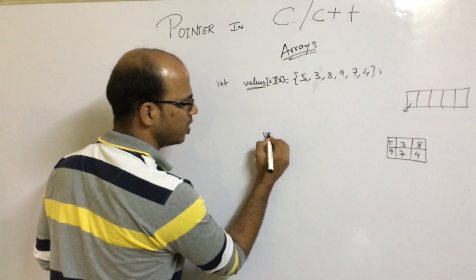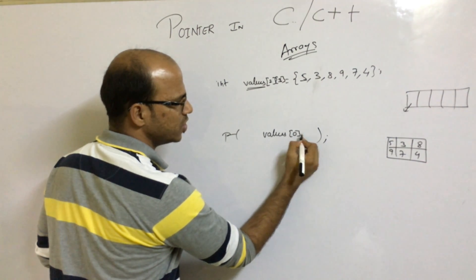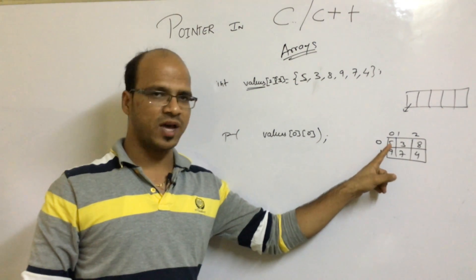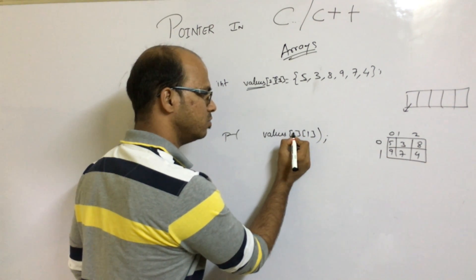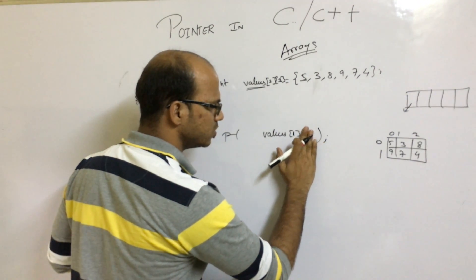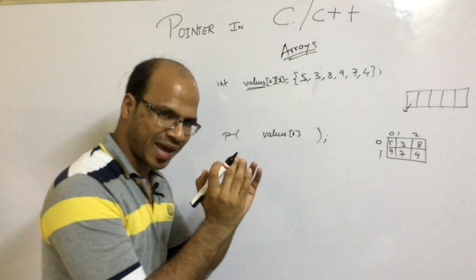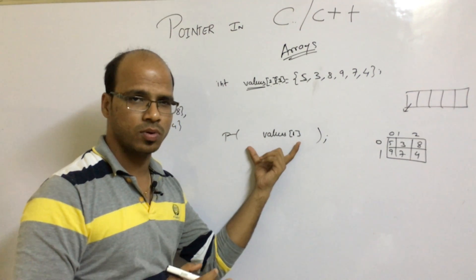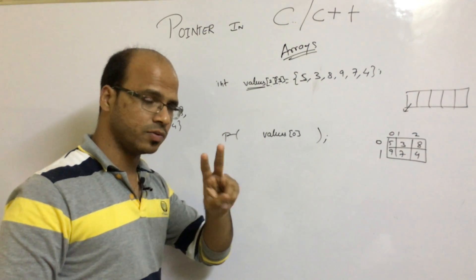To fetch values from a 2D array using array notation, inside printf we say values[0][0] to get five, values[0][1] to get three, and values[1][1] to get seven. The first bracket is the row number and the second bracket is the column number. If you remove the column bracket, it represents the entire row — so values[0] represents the whole first row, values[1] represents the whole second row.